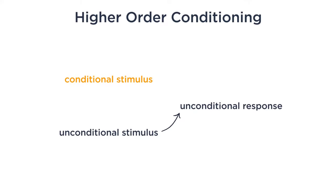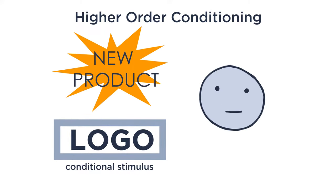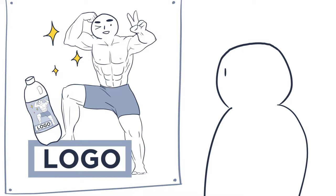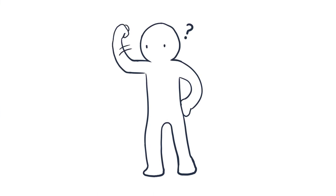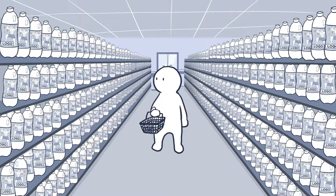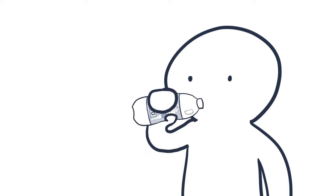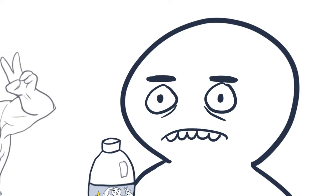Advertising also often makes use of higher-order conditioning, in which a conditional stimulus is used as an unconditional stimulus for another conditional stimulus. For instance, a company logo can be associated with a new product so that the new product prompts the same feelings associated with the logo. Say you often see a fitness company logo next to someone super beautiful and happy, and you unconsciously feel a little inadequate. Every time you see the logo next to their new fitness drink in a store, you may subconsciously remember feeling inadequate and decide to buy the drink — even though it probably tastes gross and won't actually make you beautiful or happy.